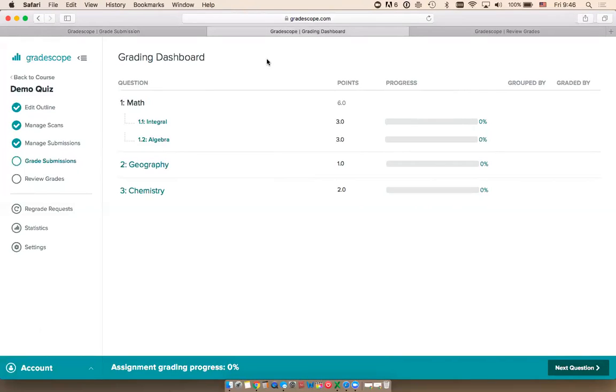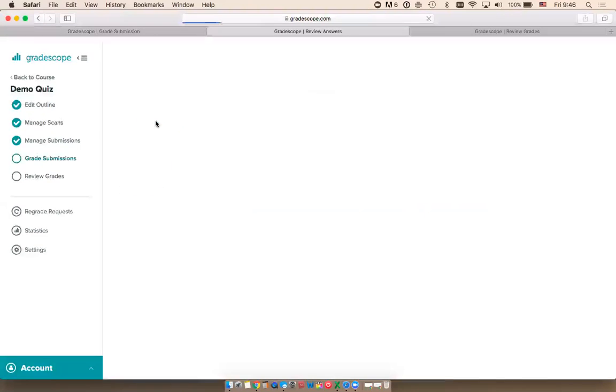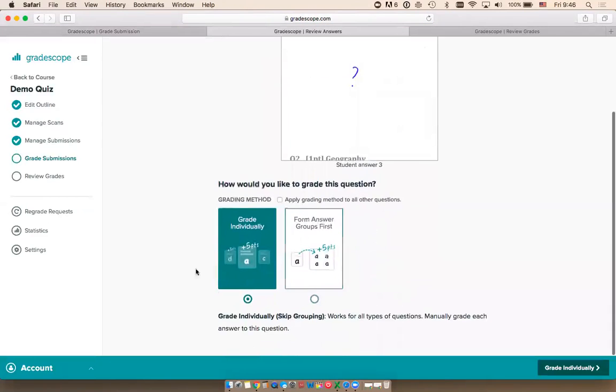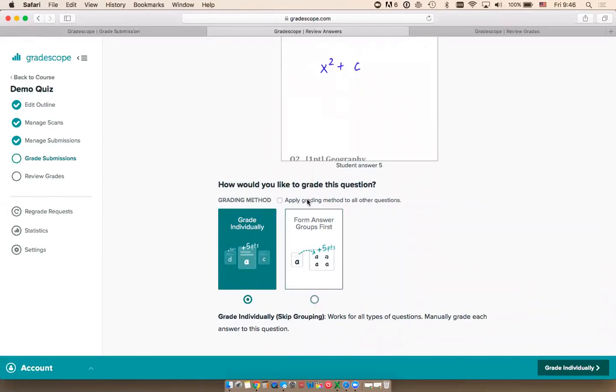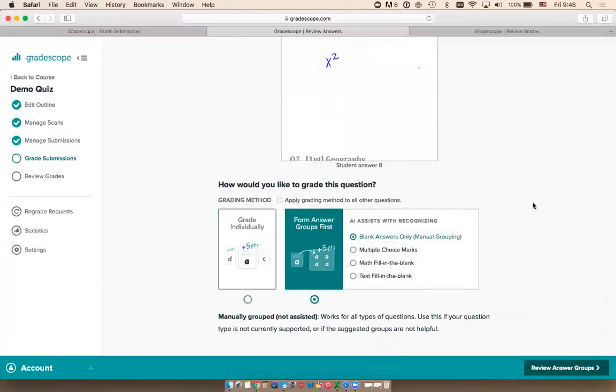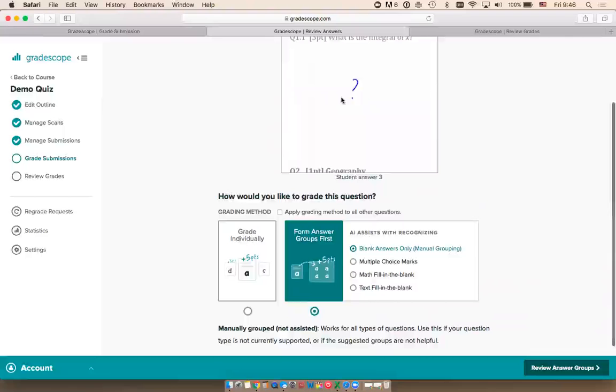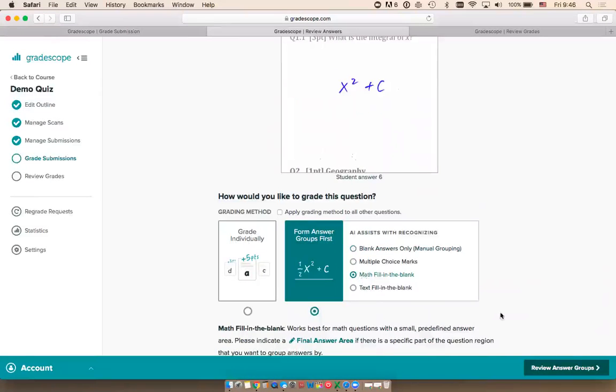I'm going to now grade the same integral question I was just grading, but instead of grading each answer individually, I'm going to form answer groups first. Gradescope can automatically form answer groups for multiple choice questions, questions where students write a math response in a fixed box or line, and questions where students write text in a box or on a line. In this case, this is a math question, so I'm going to select the math question type.